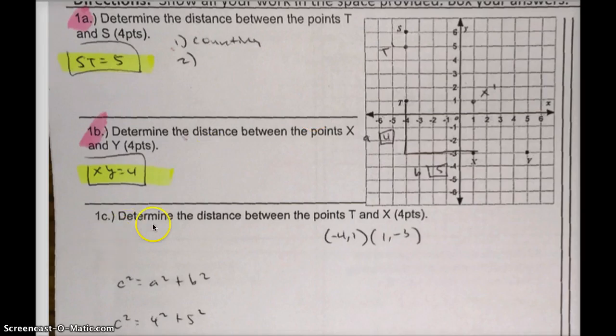Question 1c, determine the distance between the points T and X. If you recognize T and X is a diagonal, therefore I'm going to use the Pythagorean theorem. You just need to make a right triangle. There's my triangle here. So this side: 1, 2, 3, 4. So A is equal to 4 in my Pythagorean theorem. Here, B is equal to 5: 1, 2, 3, 4, 5.